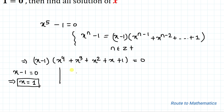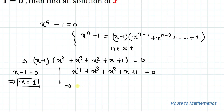Now from here we have x to the power 4 plus x cubed plus x squared plus x plus 1 equals to 0. In the next step, let's divide both sides of the equation by x squared.